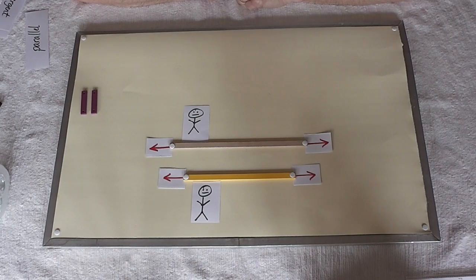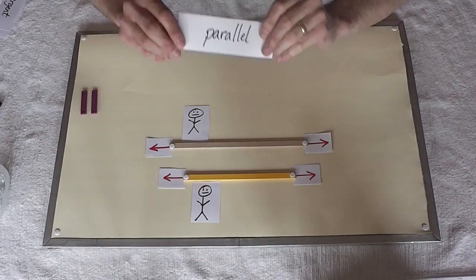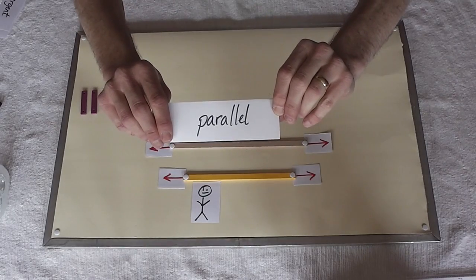When two lines never meet, and they never get further apart, and they never get closer together, we call these lines parallel lines.